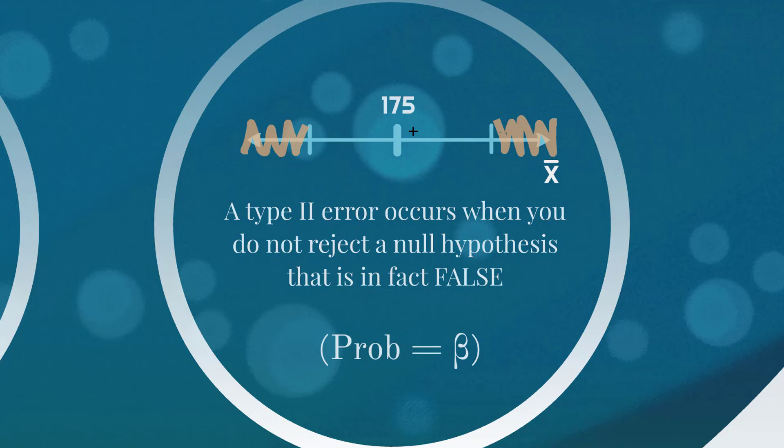And for your own knowledge, one minus beta is called the power of the hypothesis test. So if beta is the probability of a type two error, which is not rejecting a null hypothesis that is in fact false, one minus beta is the probability of rejecting a null hypothesis that is in fact false, which is what we'd want to do if the null hypothesis was false, right? We'd hope that we would reject it. And the chance of us doing that is the model's power.